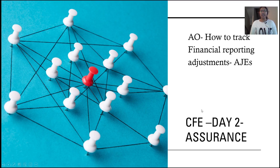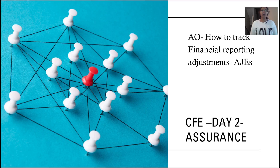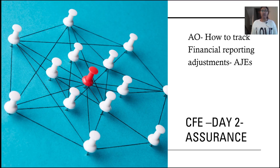Today we are discussing a topic related to assurance AOs, but it helps to better organize your Day 2. Specifically, how to track the financial reporting adjustments — the adjustment journal entries for Day 2 CPA. A Day 2 typically has 5 to 6 financial reporting AOs, and there will be adjustments affecting either your P&L, assets, or liabilities that you will have to explain after solving the AO.